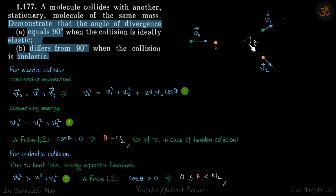It can be anything else. Now let's see that for elastic collision we will conserve momentum, so v0 vector equals v1 vector plus v2 vector. We're doing it in vector form because we need the angle between them.